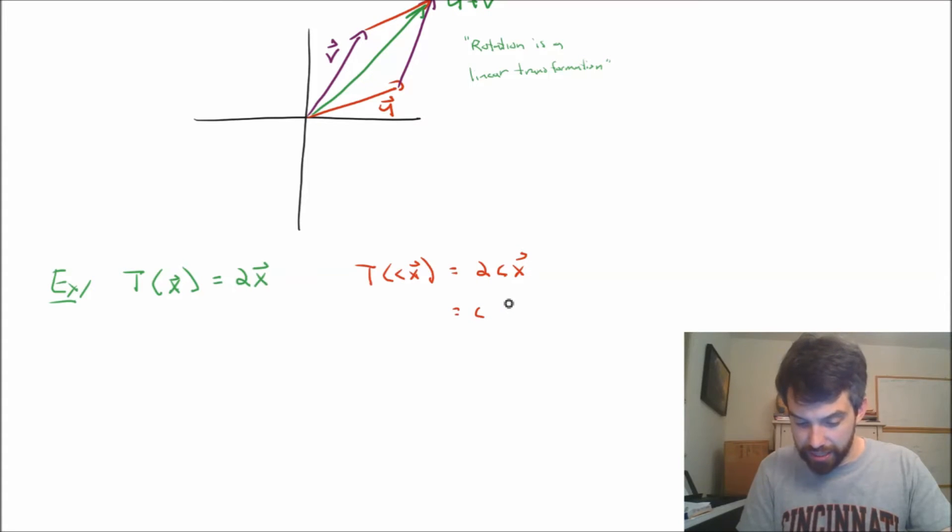And this is the same thing as c times 2x because 2 and c are just scalars. I can alternate those around. And so indeed, that is respecting the scalar multiplication.